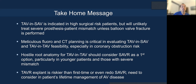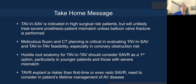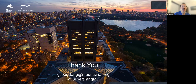In summary, TAVR in SAVR is indicated in high surgical risk patients but will unlikely treat severe mismatch unless balloon valve fracture of the surgical valve is performed. Either way, meticulous fluoroscopic and CT planning is needed for TAVR in SAVR or TAVR in TAVR feasibility, especially regarding coronary obstruction risk. Hostile root anatomy in TAVR in TAVR should prompt consideration of SAVR as the first option, particularly for younger patients or those with severe mismatch. TAVR explant is riskier than first-time or redo SAVR, so lifetime management of aortic valve disease must be considered. Thank you very much for your attention.